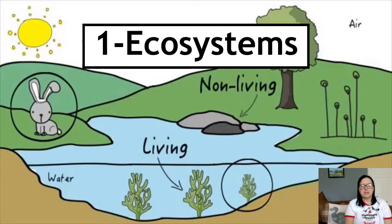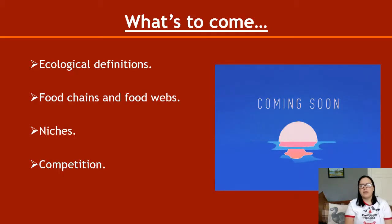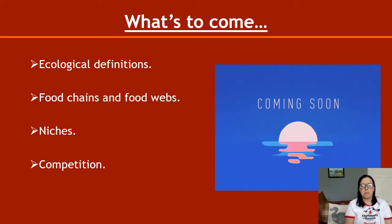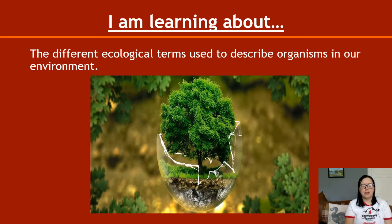We'll be starting with ecosystems in this particular key area. We'll be looking at ecological definitions, food chains, food webs, niches and competition. I've split it into these videos to separate out those particular parts. This time, we'll be looking at ecological terms used to describe organisms — essentially, this is going to be a vocabulary lesson. Here's a definition of a thing — memorise it.